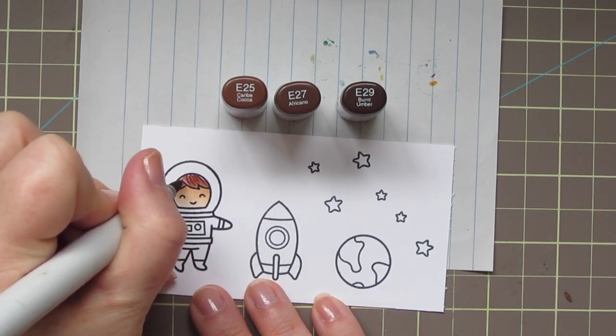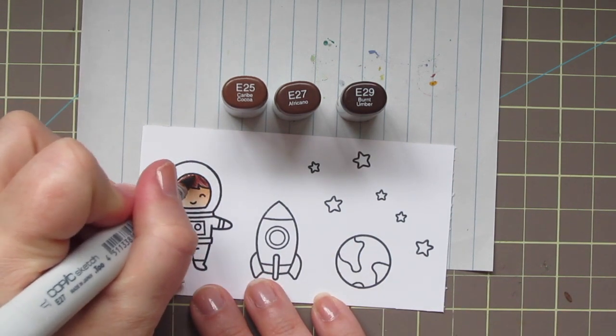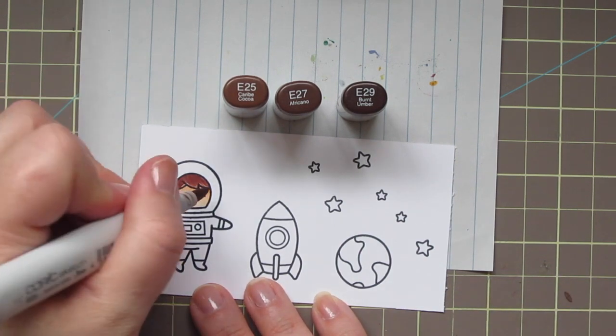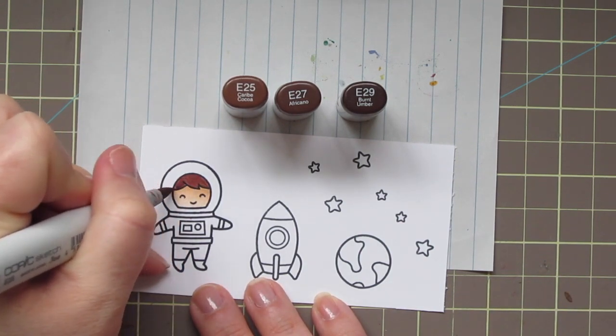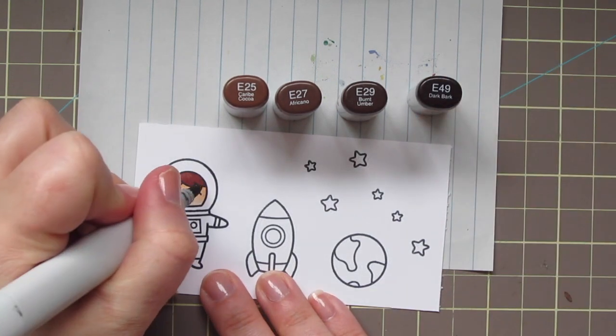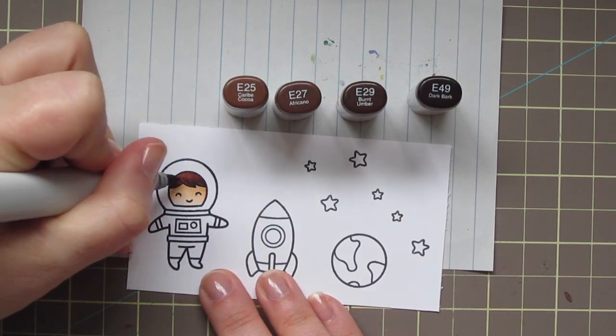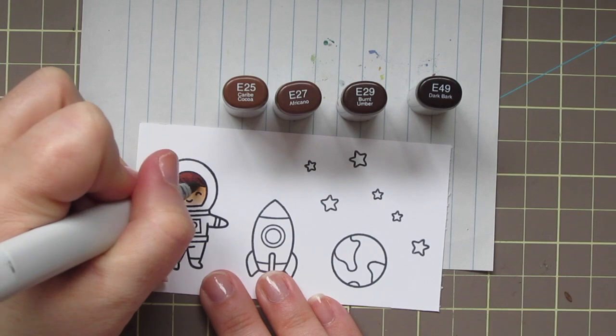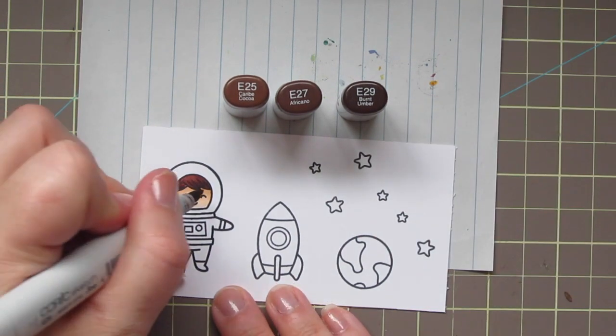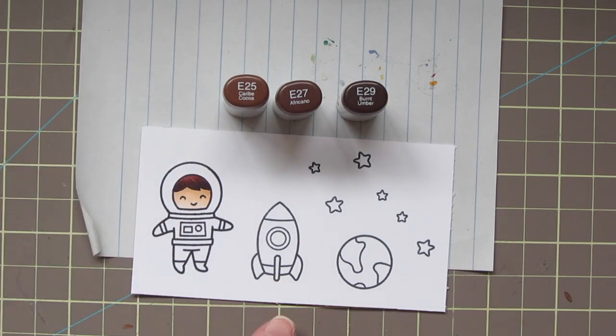I'm still practicing hair so I wanted to try to do my best and make it look natural. I'm adding in some flicks of color to make it look like there's highlights and lowlights. But they were blending in just a bit too much for me, so I added in the E49, which is my darkest brown that I own, and just touched in a little bit on the very tips of his hair so that there was more definition and then just blended that out with the E29.